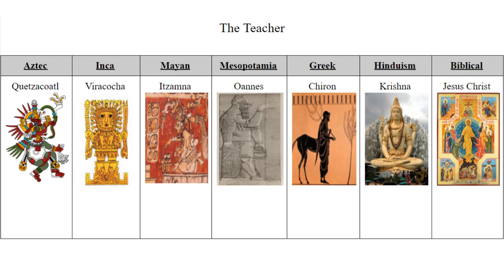Next is the teacher character archetype. Quetzalcoatl, Viracocha, Itzamna, and Oannes are all deities that shared arts, knowledge, and wisdom with their respective peoples, making them fitting for this archetype. Chiron, on the other hand, is a legendary teacher of heroes — rather than teaching the entirety of people, he specifically taught Greek heroes. Krishna was an advisor to Arjuna in the Bhagavad Gita, making him a teacher to the hero. And Jesus Christ was a rabbi or teacher during the time of his existence.